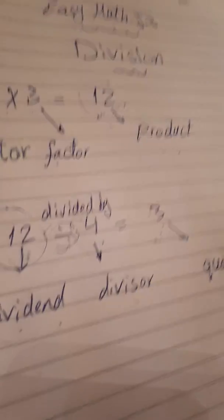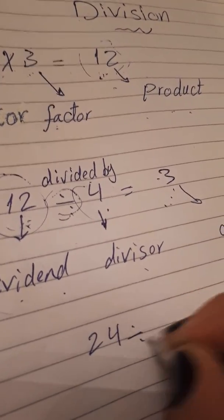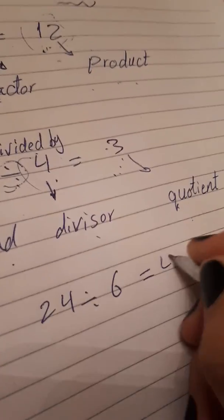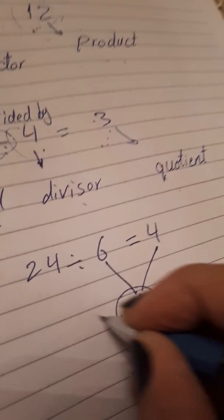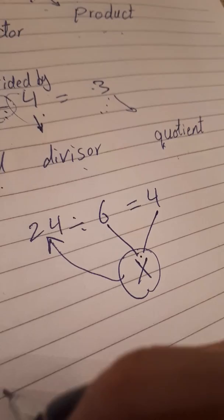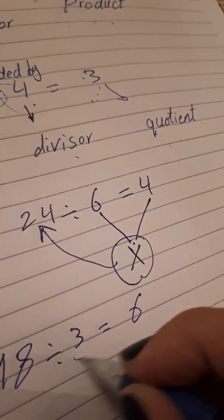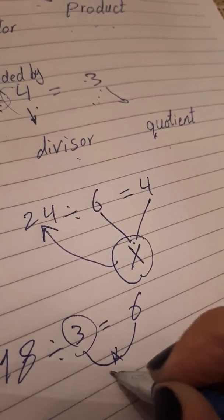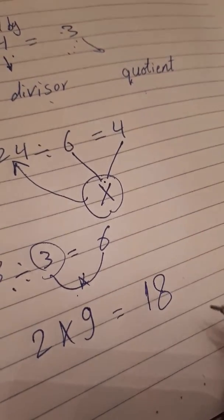This is the inverse relationship. For example, if we say 4 times 3 equal 12, then 24 divided by 6 equal 4 — and 4 times 6 equal 24. Similarly, 18 divided by 3 equal 6, and 3 times 6 equal 12, and so on.